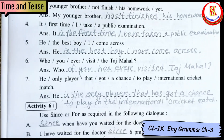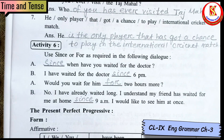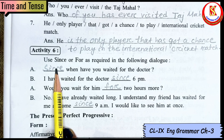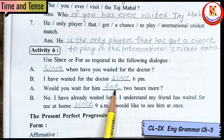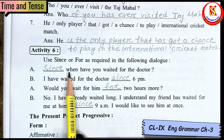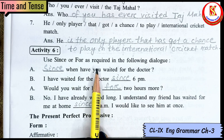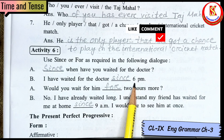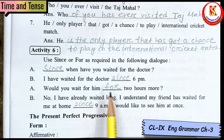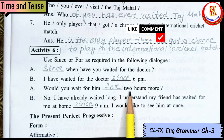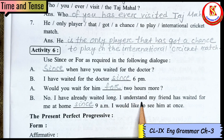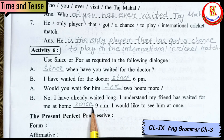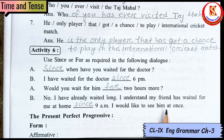Next is Activity 6. We have to use either 'since' or 'for'. Use 'since' when a beginning point in time is given, and use 'for' when a duration of time is given. Example: 'I have waited for the doctor since 6 pm' — beginning time given, so 'since'. 'Would you wait for him two hours?' — long period, so 'for two hours.' 'I understand my friend has waited for me at home since 9 am.'